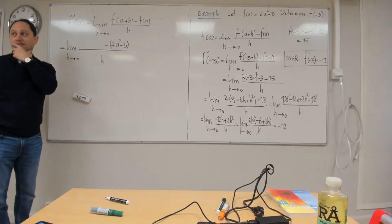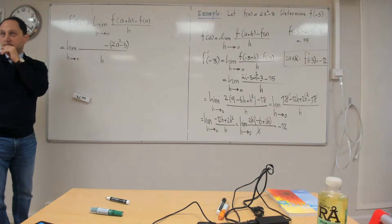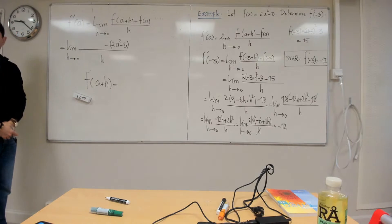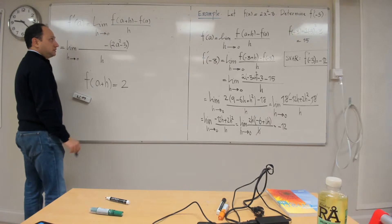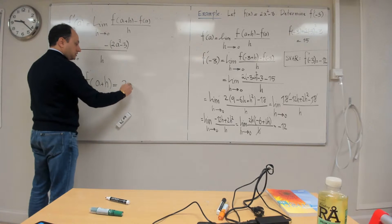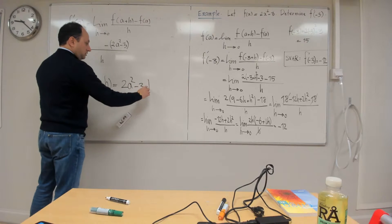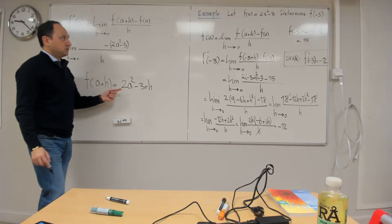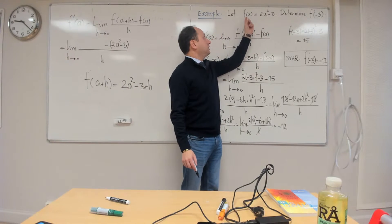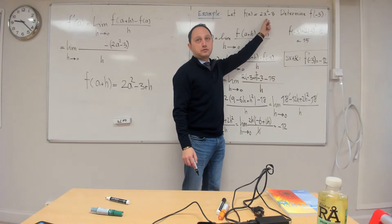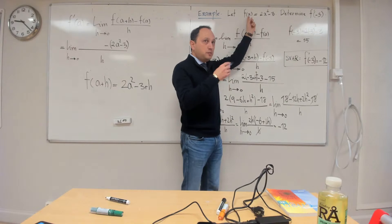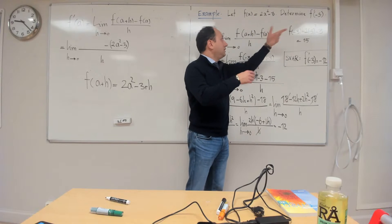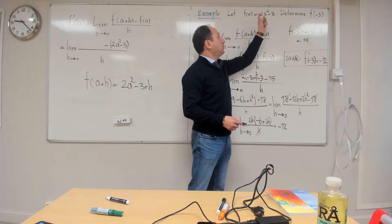The hard part is expanding this. The exponent has priority — raise (a plus h) to power 2 first: it becomes a squared plus 2ah plus h squared. Then I have minus 3. It's not right to write plus — I have to write the minus brackets. And then divided by h, as h goes to 0. Next I multiply 2 inside: 2a squared plus 4ah plus 2h squared. Then I have minus 2a squared. These 2a squared and minus 2a squared cancel.